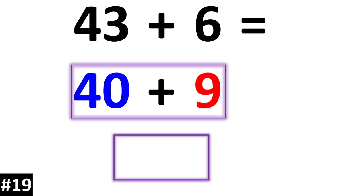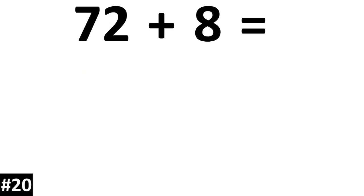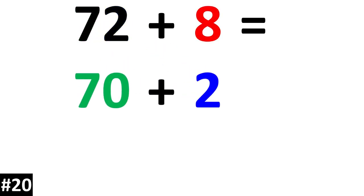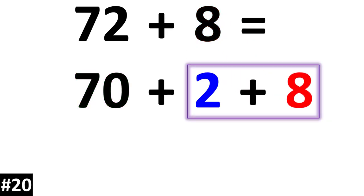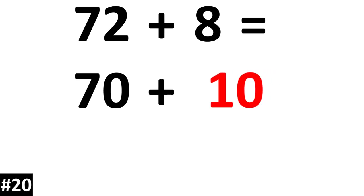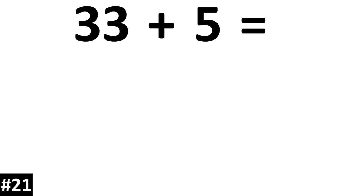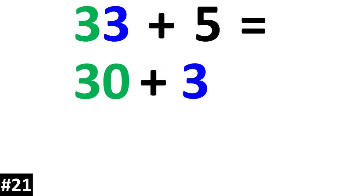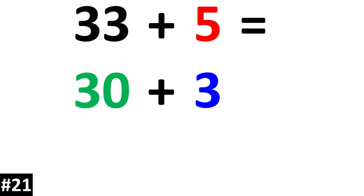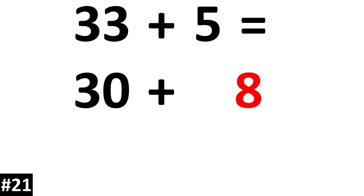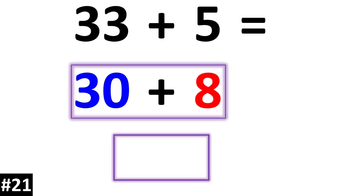40 plus 9 is 49. Next, 72 plus 8. 72 is the same thing as 70 plus 2. If we add the 8, 2 plus 8 is equal to 10. 70 plus 10 is equal to 80. Next, 33 plus 5. 33 is the same thing as 30 plus 3. If we add the 5, 3 plus 5 is equal to 8. 30 plus 8 is equal to 38.